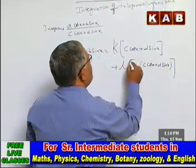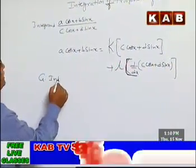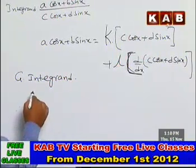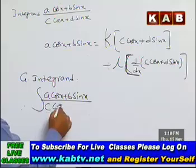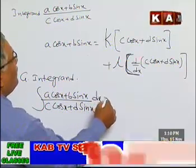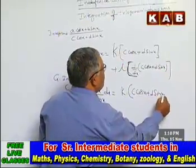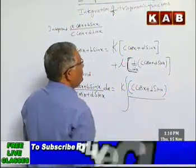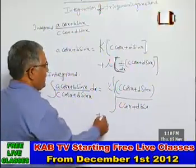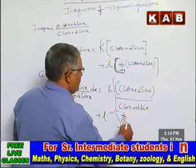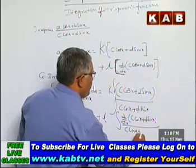The advantage of this approach: the given integrand splits into k × integral of (c cos x + d sin x)/(c cos x + d sin x) dx plus l × integral of [d/dx(c cos x + d sin x)] / (c cos x + d sin x) dx.